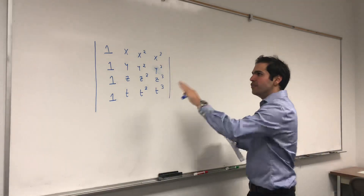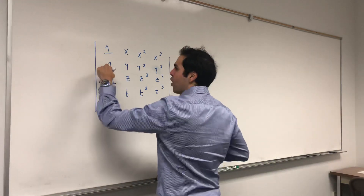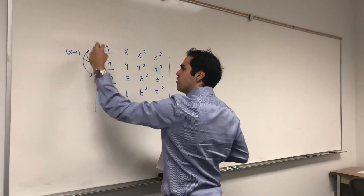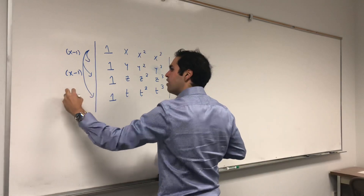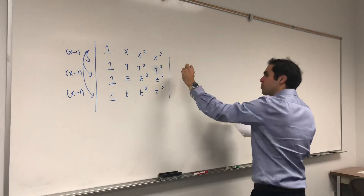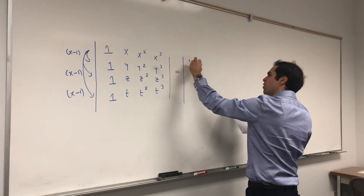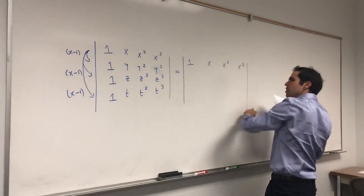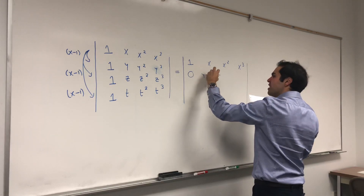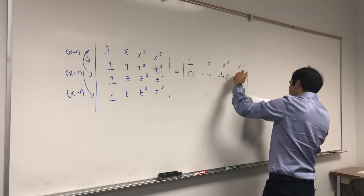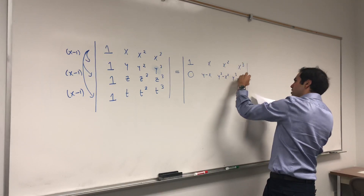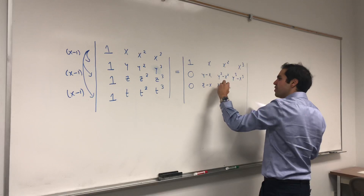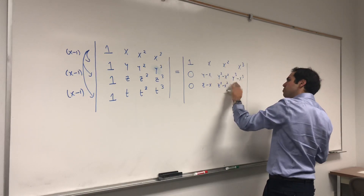How do we do this? The start is actually like the previous video: we want to get rid of those ones, and for this we subtract the first row from the second row, the first row from the third row, and the first row from the fourth row. Then you get the determinant of 1, x, x², x³ in the first row; then 0, y−x, y²−x², y³−x³; then 0, z−x, z²−x², z³−x³; and similarly for t.